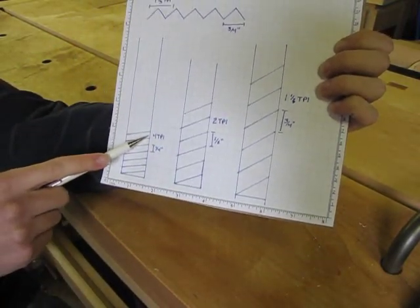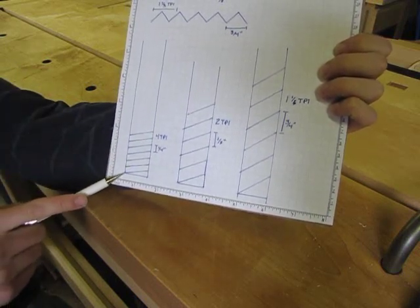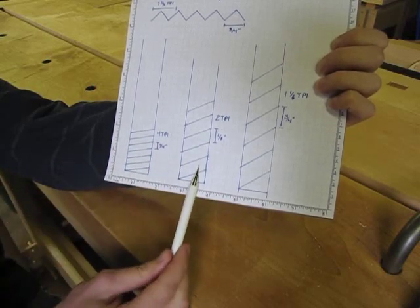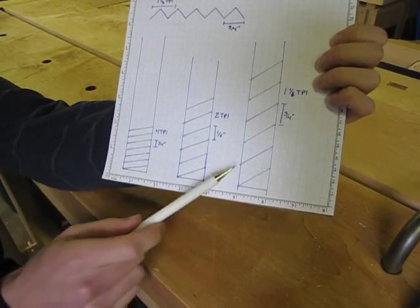With the four tooth per inch pattern, which is what I'm doing in the tutorial, each line is spaced a quarter of an inch apart. With the two tooth, it's a half an inch, and the one and one third, it's three quarters of an inch.